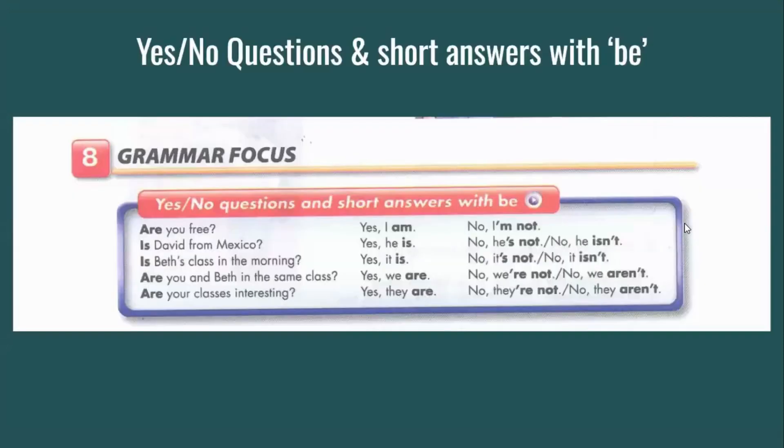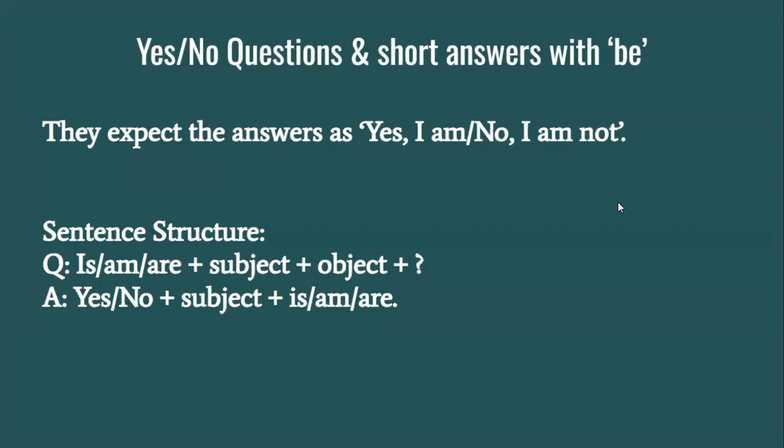This is what we look at in the book, but we'll be looking at how to make yes and no questions. If I'm talking about yes and no questions, I start with the helping verbs that we looked at in the last video: is, am, are, depending on your subject. Then you will have your subject and then the object.